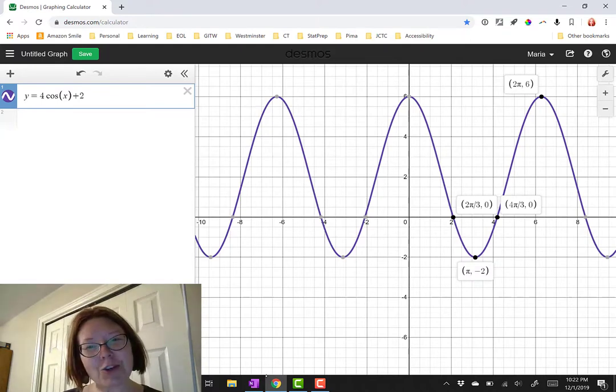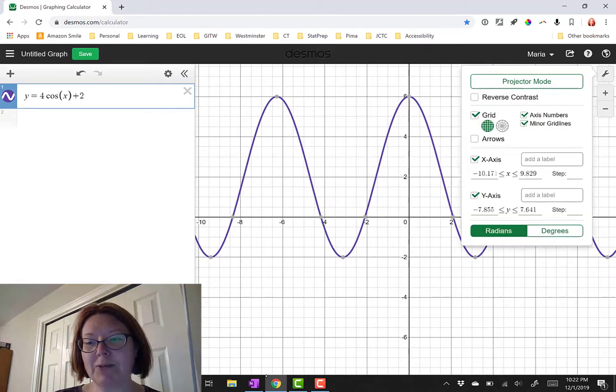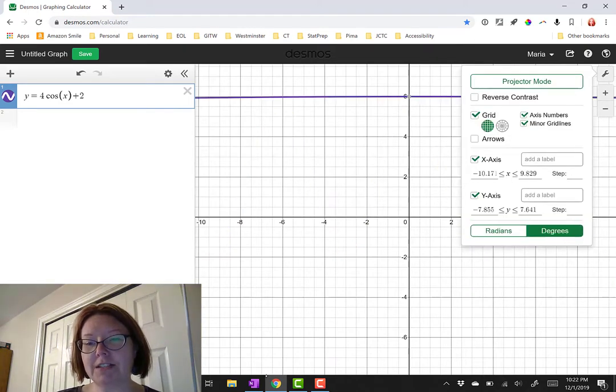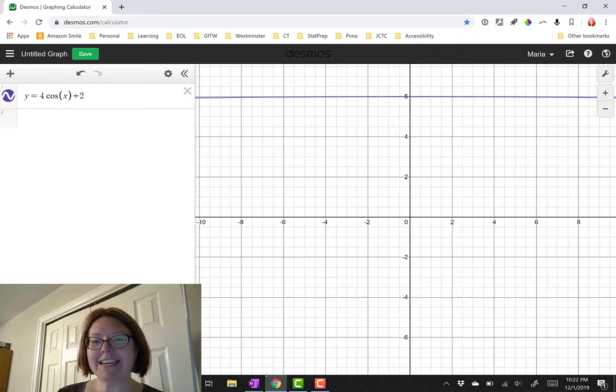Now just to show you how different this function looks if we were graphing in degrees, I'm going to move over to that wrench menu and switch to degrees for just a second. And what you'll see is basically a horizontal line. It looks horizontal anyways.